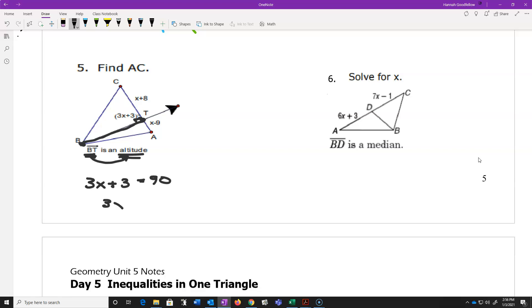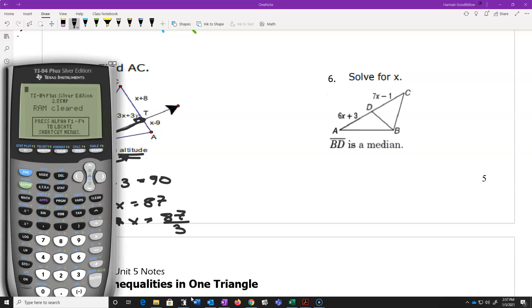So if I subtracted 30, I get three X is equal to 60. And then if I divided by three, 60 divided by three is... sorry, 87 divided by three is 29.